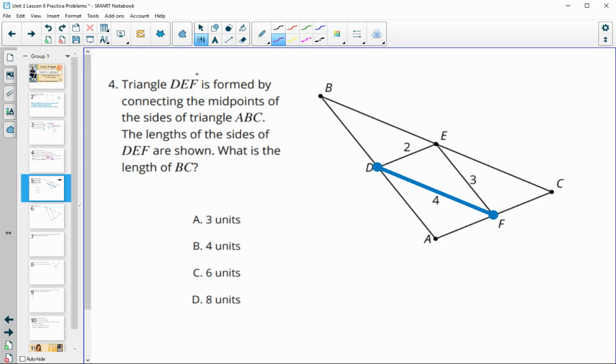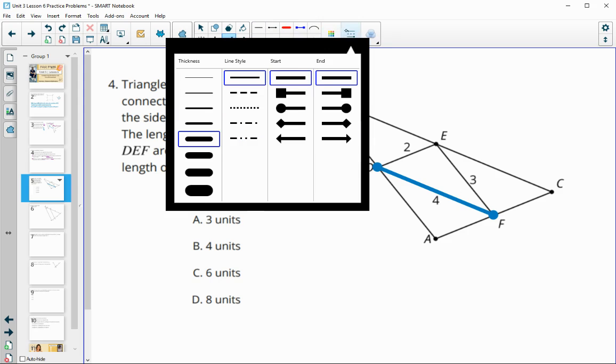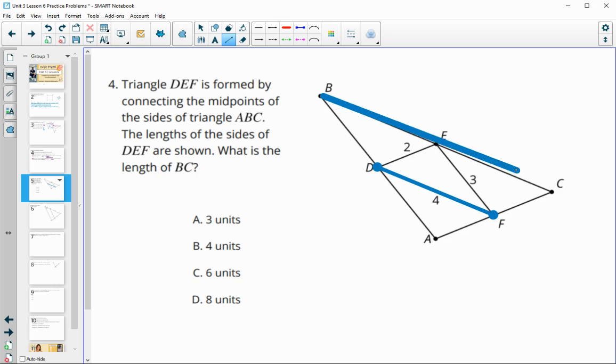Number four, triangle DEF is formed by connecting the midpoints of the sides of the triangle. The lengths of DEF are shown. What is the length of BC? So now we're trying to figure out the length of this side. And so that one's going to be two times bigger than DF. And so DF is four. So BC is eight.